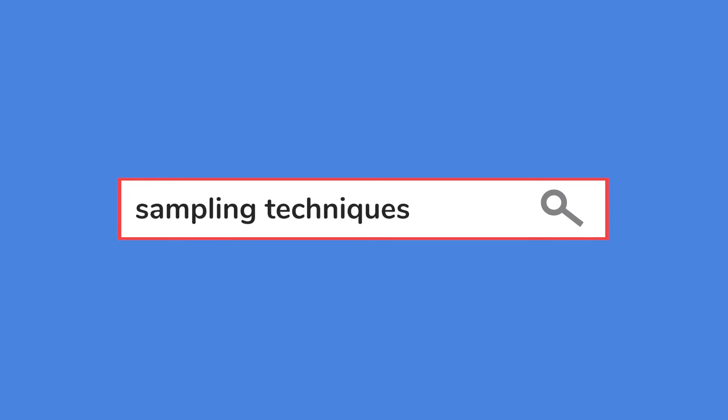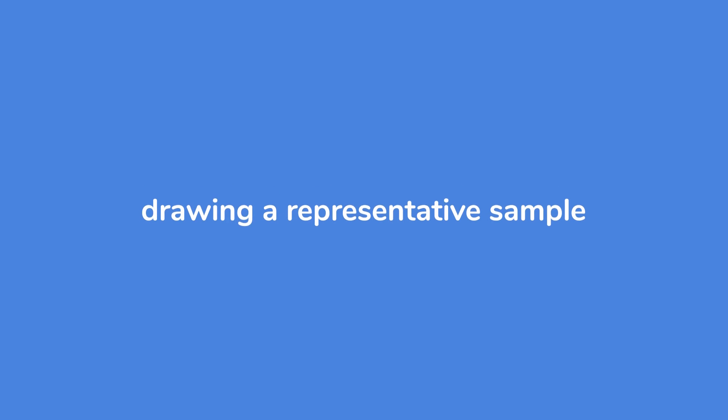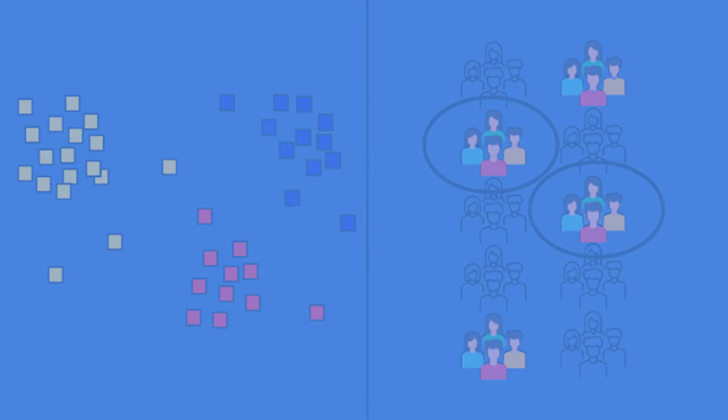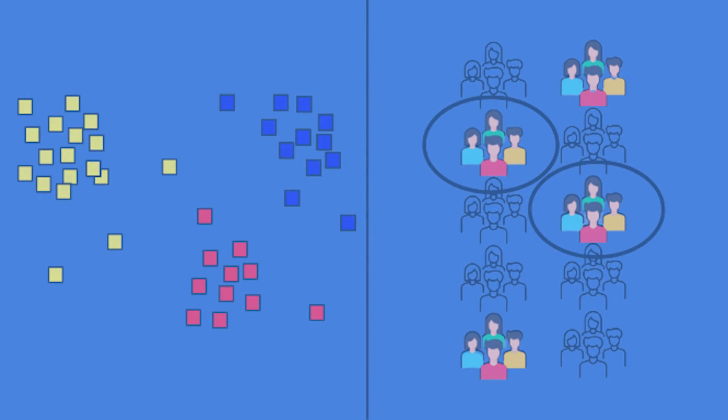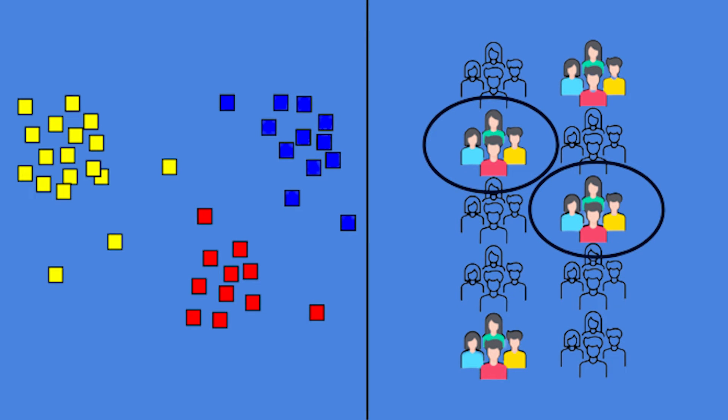In the aforementioned previous video, we discussed the different types of sampling techniques when it comes to drawing a representative sample, such as random sampling, systematic sampling, or stratified sampling, to name a few. Make sure to check out that video.